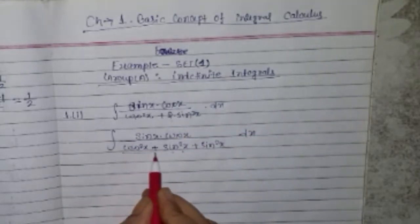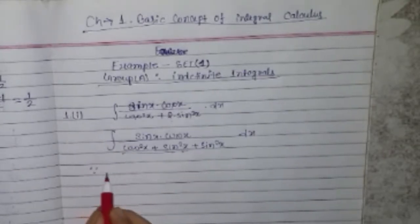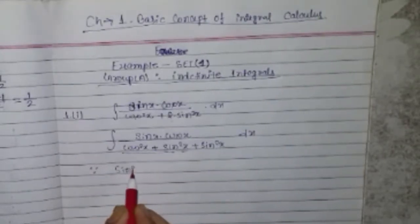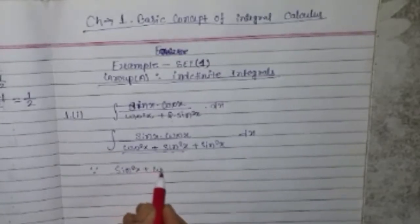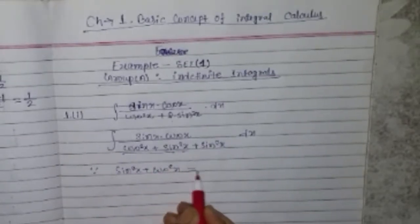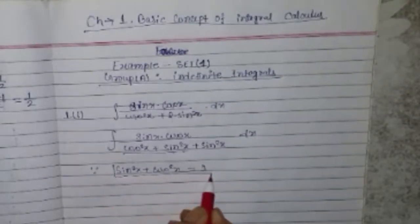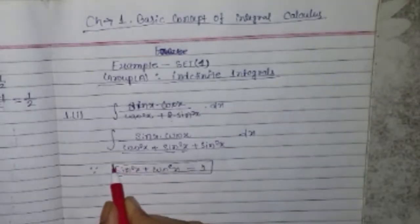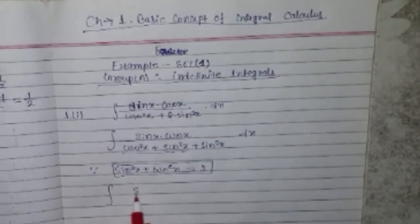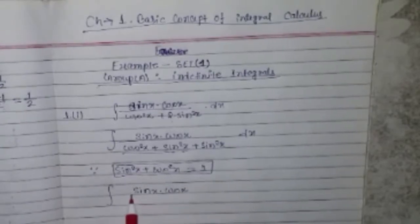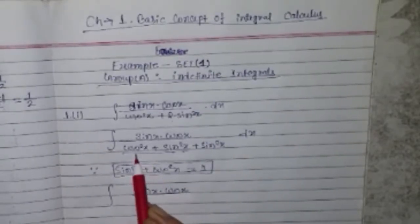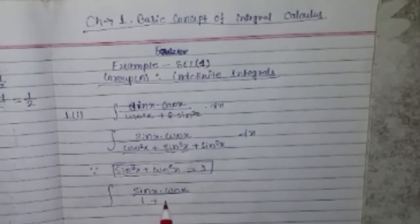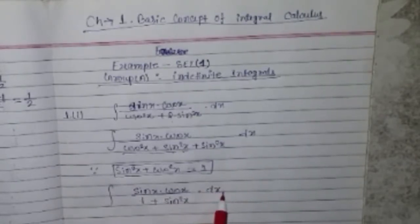Yahan se lekar yahan tak, yaani ki sin²(x) plus cos²(x) equal 1 hota hai. Toh yeh maan hum wahan put kar sakte hain. Integration sin(x) into cos(x) by cos²(x) plus sin²(x) — 1 plus sin²(x) — into dx.